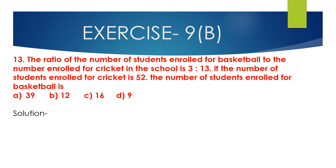Now we will solve question number 13. The ratio of the number of students enrolled for basketball to the number enrolled for cricket in the school is 3 is to 13. If the number of students enrolled for cricket is 52, find the number of students enrolled for basketball. The options are 39, 12, 16, and 9.